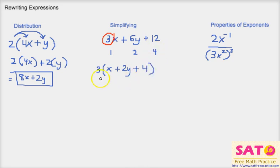If you're not sure, you can always check your work by doing distribution and getting it all out. And if we check our work, we get 3x plus 3 times 2y, which is 6y, plus 3 times 4, which is 12. So that is correct.